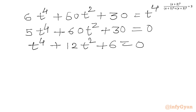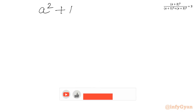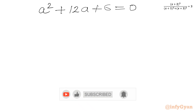Now we can use another substitution: let t^2 = A. Then t^4 = A^2, and the equation becomes A^2 + 12A + 6 = 0. This is a quadratic equation, so we can use the quadratic formula.